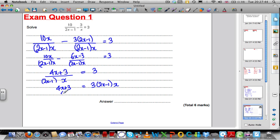Let's multiply this out. 4x plus 3 is equal to, you end up getting 3 times 2x is 6x, 3 times minus 1 is minus 3, and you've all got that times x.